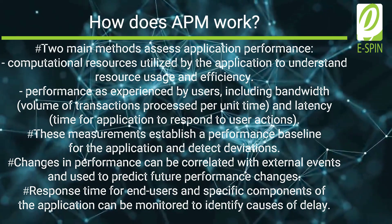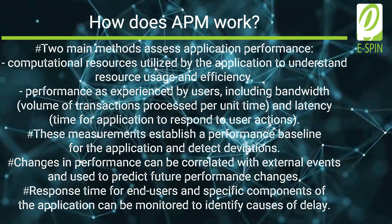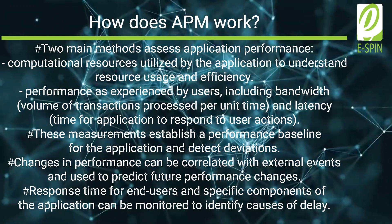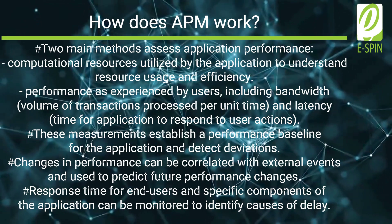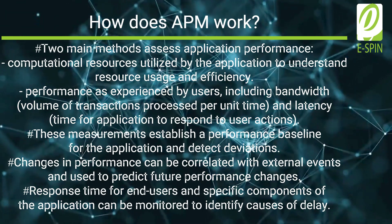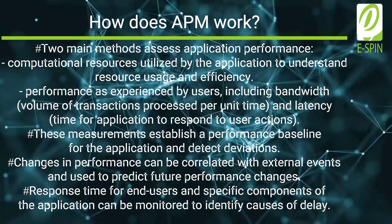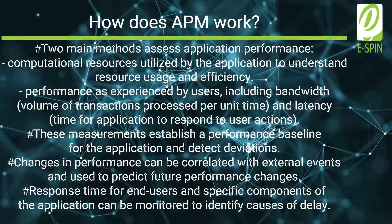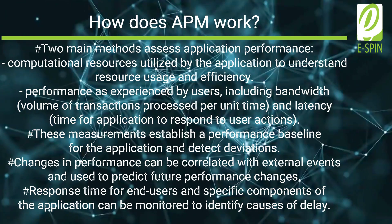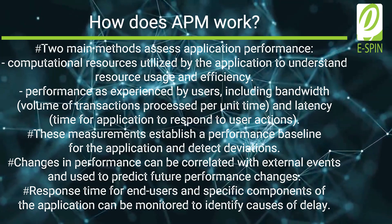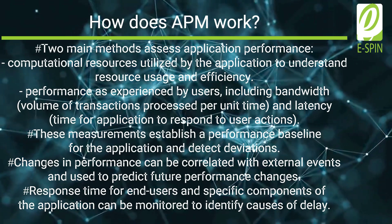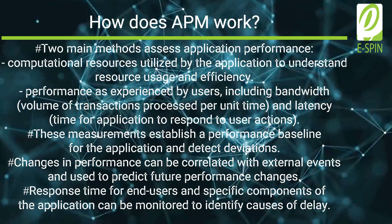Application Performance Management — how does it work? There are two main methods used to assess application performance. The first method involves measuring the computational resources utilized by the application, providing insights into resource usage and efficiency. The second method measures performance as experienced by the application's users, consisting of two components: bandwidth, which refers to the volume of transactions processed per unit time, and latency, which measures the time it takes for the application to respond to user actions. By measuring these quantities, a performance baseline can be established, serving as a reference point for detecting changes in performance. Any deviations can be correlated with external events and used to predict future changes.